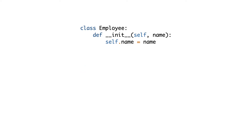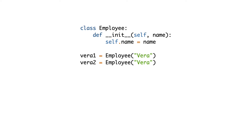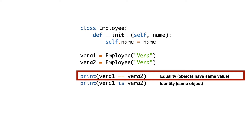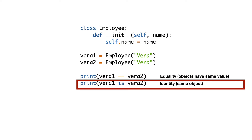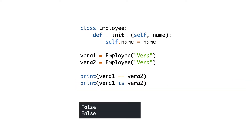Look at this class. It's an Employee class which is initialized with an employee name. Now I create two employees with the same name. Let's compare the objects. The equality operator checks if both objects have the same value. The 'is' keyword checks the identity, which means checking if both variables point to the same object in memory. Both comparisons return false.